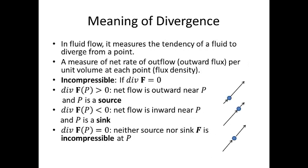In fluid flow, divergence measures the tendency of a fluid to diverge from a point. It's a measure of the net rate of outflow, or outward flux, per unit volume at each point — or another way to think about it is flux density. We call a vector field incompressible if the divergence equals zero. If the divergence of the vector field at a point equals zero, then F is neither a sink nor a source; it's incompressible at P. This doesn't mean no fluid is flowing into the point, but the amount flowing in equals the amount flowing out.